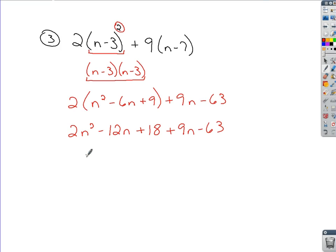Combine the like terms, you've got 2n squared. We've got a couple of n's here, so it would be minus 12 plus 9, so minus 3n. And for our constants, we've got a positive 18 and a negative 63, so that would be negative 45. There's your simplified expression.